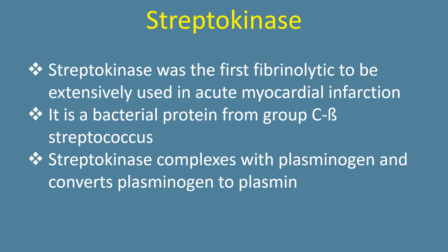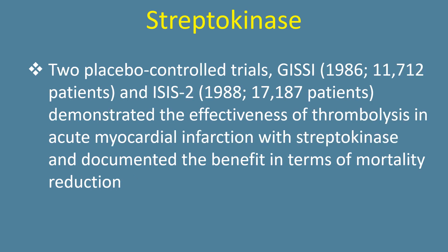Streptokinase was the first fibrinolytic to be extensively used in acute myocardial infarction. It is a bacterial protein from group C-beta streptococcus. Streptokinase complexes with plasminogen and converts plasminogen to plasmin. Two placebo-controlled trials, GISSI and ISIS-2, demonstrated the effectiveness of thrombolysis in acute myocardial infarction with streptokinase and documented the benefit in terms of mortality reduction.